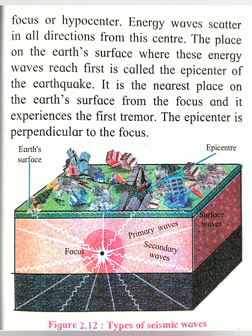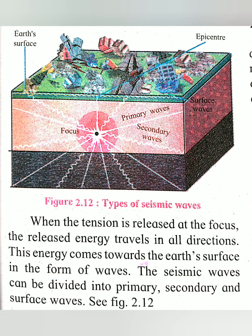The epicenter is the nearest place on the earth's surface from the focus, and it experiences the first tremor. The epicenter is perpendicular — at 90 degrees — to the focus. It is the closest region of the earth to the focus. When the tension is released at the focus, the released energy travels in all directions and comes towards the earth's surface in the form of waves.